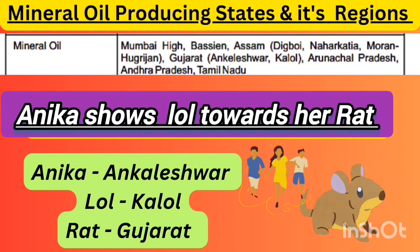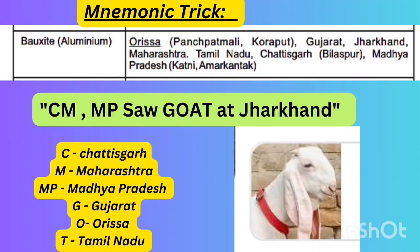Next is about bauxite. The shortcut is: 'CM and MP saw goat at Jharkhand.' CM refers to Chhattisgarh and MP refers to Madhya Pradesh as major bauxite producing states, with Jharkhand also included.